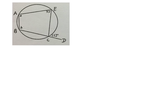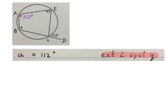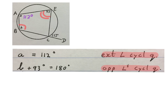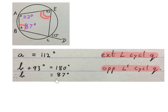Here again we have a circle with a cyclic quadrilateral inside it and an exterior angle. We know that this angle is equal to that opposite interior angle, and the other two opposite angles add up to 180. We start by saying small a equals 112 degrees — exterior angle of a cyclic quad. Then small b plus 93 equals 180 degrees — opposite angles of a cyclic quad — so b equals 87 degrees. I like to write it in on my sketch.